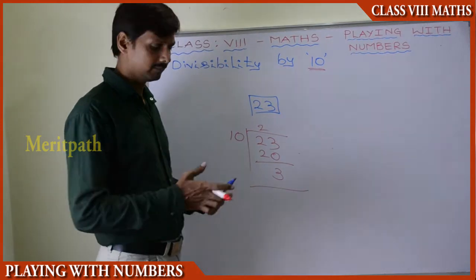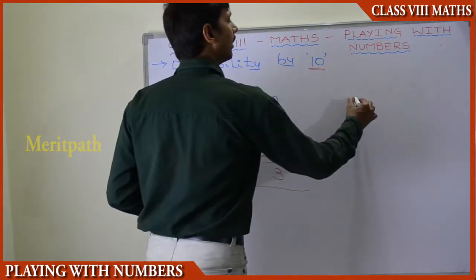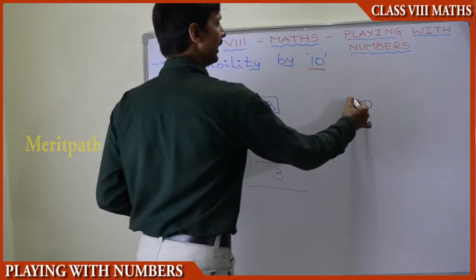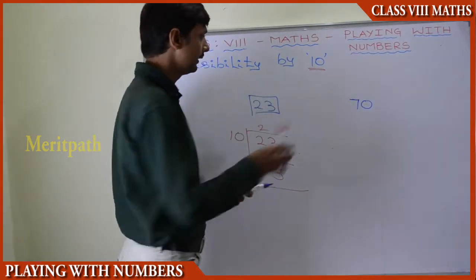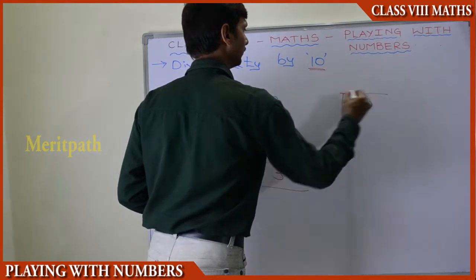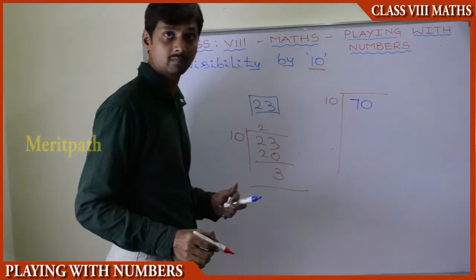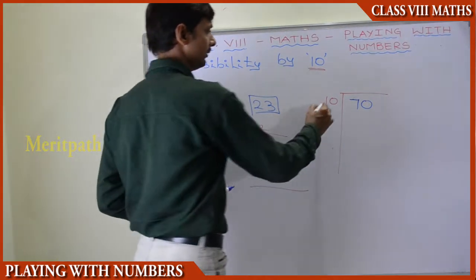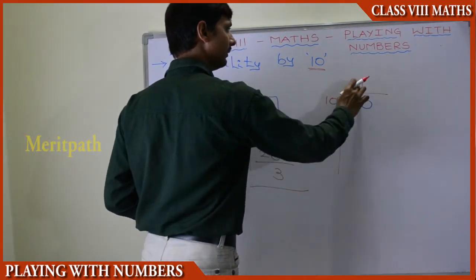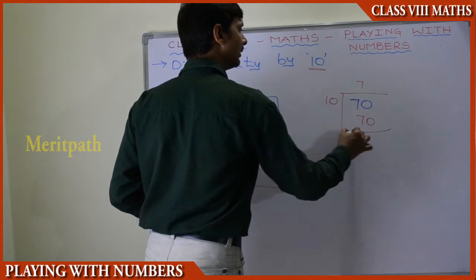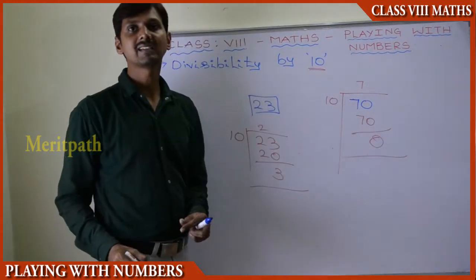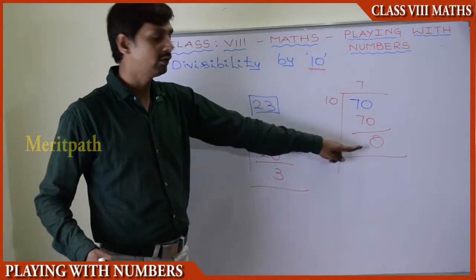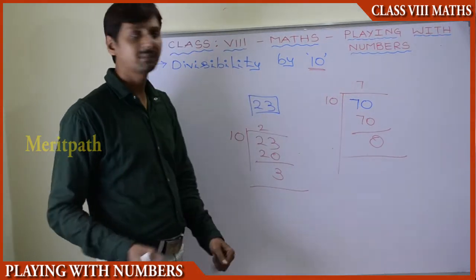Let us take another number, like 70. Is it divisible by 10 or not? When we divide 70 by 10, we get 7 times — 7 times 10 is 70 — so we got the remainder 0. Therefore, 70 is divisible by 10 because we got remainder 0.